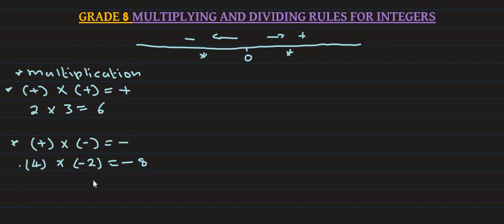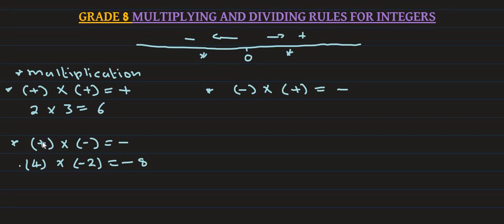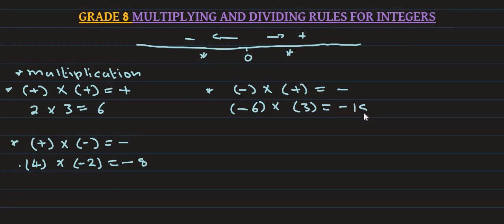Positive times positive gives a positive answer. Positive times negative gives a negative answer. The number is positive times negative, so the answer is negative 6. We multiply 3. For negative times positive, we are negative. For 3 multiplied by 6, we get 18. The answer is negative 18.